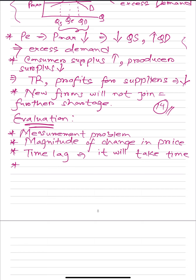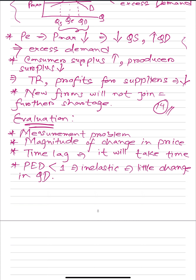A fourth evaluation point: demand for gas and electricity is inelastic — PED is less than one — because it is a necessity product. Even if prices decrease, consumption may not increase more than proportionately. A decrease in price will not mean consumers drastically increase consumption; they'll consume pretty much the same or slightly more. So there might be only a little change in quantity demanded, and it might not make a big difference.